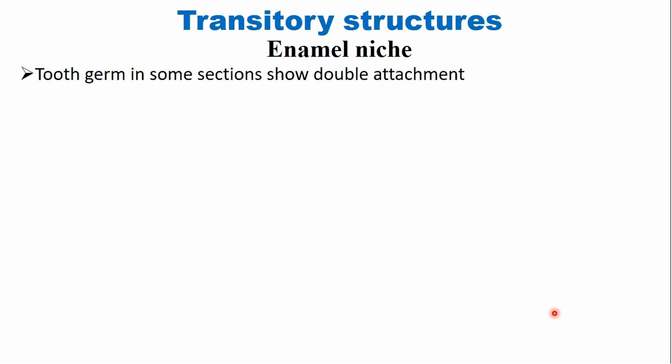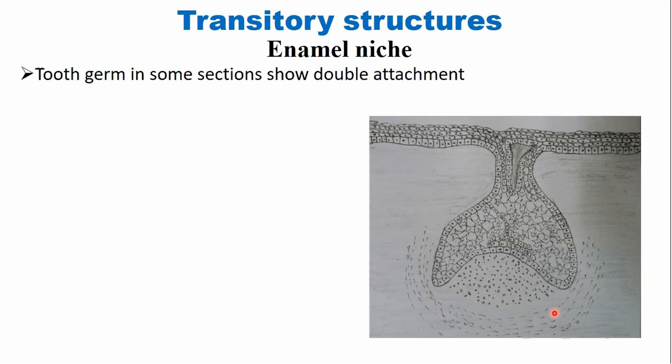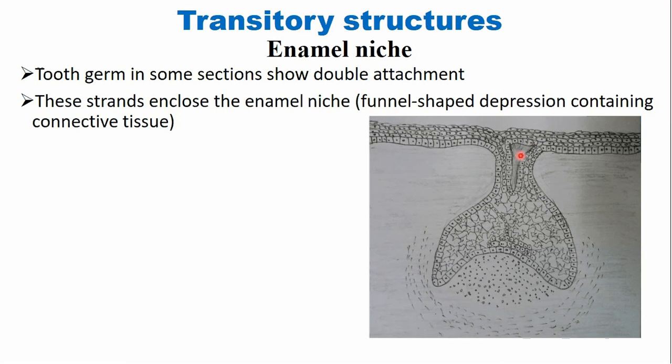There are some transitory or temporary structures formed during tooth development. One of these is the enamel niche. The tooth germ in some sections shows double attachments of the dental lamina — sometimes two or three attachments rather than a single rod. In between these attachments, connective tissue is filled — the same connective tissue surrounding the enamel organ. This central portion containing connective tissue is known as the enamel niche.